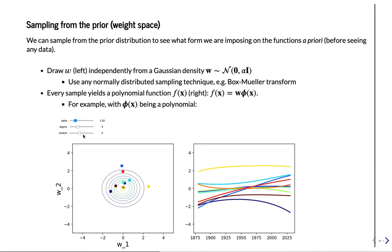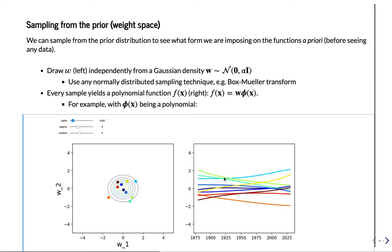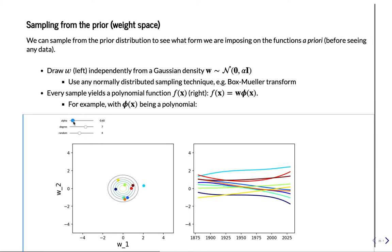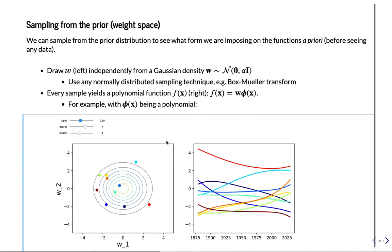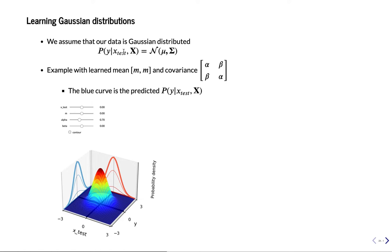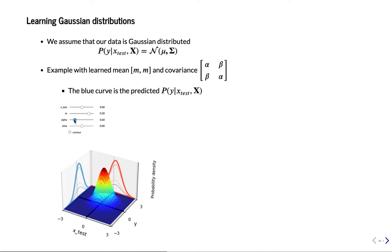These are our priors — the prior distribution before seeing any data. This is the prior distribution of models. Now I'm going to learn what the right distribution is: this is the prior, and I'll learn the posterior after seeing data. We assume our data is going to be Gaussian distributed, so we want to learn the mean μ and the covariance matrix. The mean defines the center of the distribution; alpha, as we saw, defines the width — make it smaller and it's more narrow.